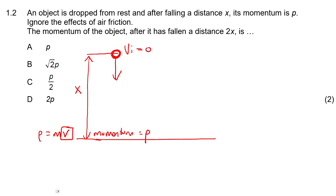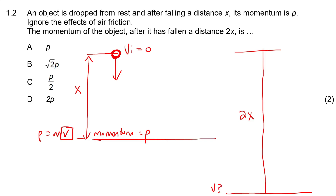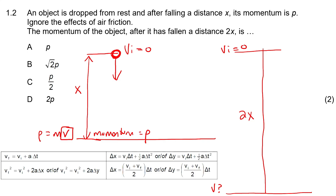We need to think about what happens to the velocity if we double the distance fallen. If the object falls a distance of 2x, we need to find its velocity at the bottom. It starts with a velocity of zero, so we look at our equations of motion — specifically one that doesn't involve time, since we have no time in this question. So we'll use v² = u² + 2as.